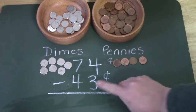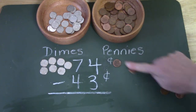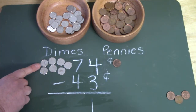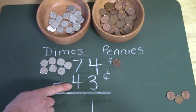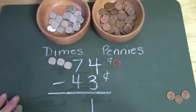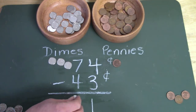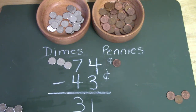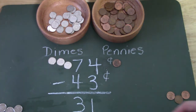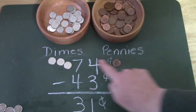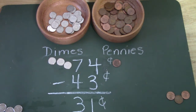Four pennies take away three: one, two, three. How many are left? One. Very good. Now over here I have seven dimes and I'm going to take away four: one, two, three, four dimes. I'm left with three dimes. 74 cents take away 43 cents is 31 cents: 10, 20, 30, 1. Well done.